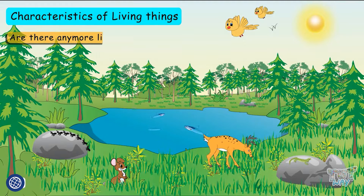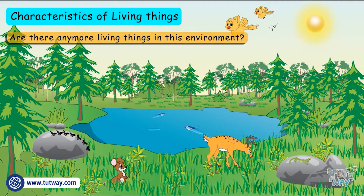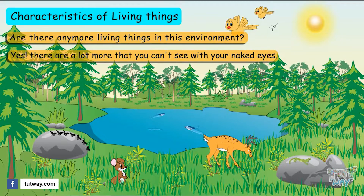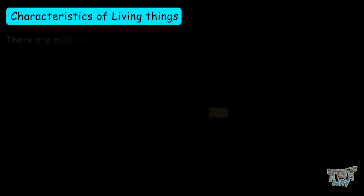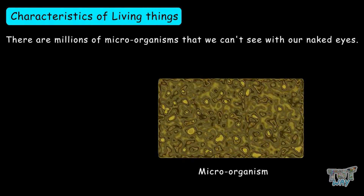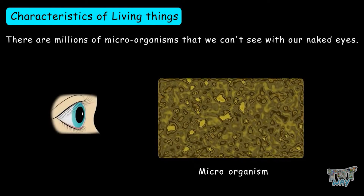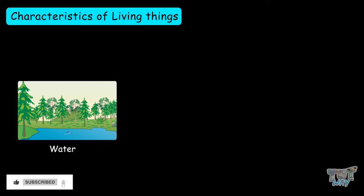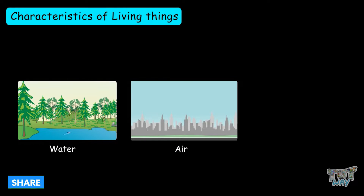Are there any more living things in this environment? Yes! There are a lot more that you can't see with your naked eyes. The air, water, and soil contain millions of microorganisms that we can't see with our naked eyes, always present in our environment — even in the water, even in the air, and even in the soil.